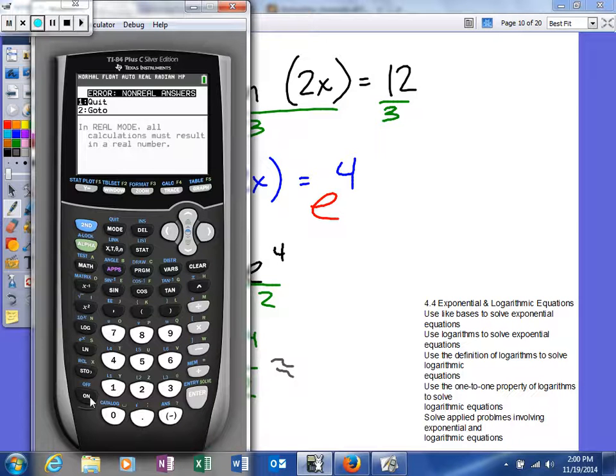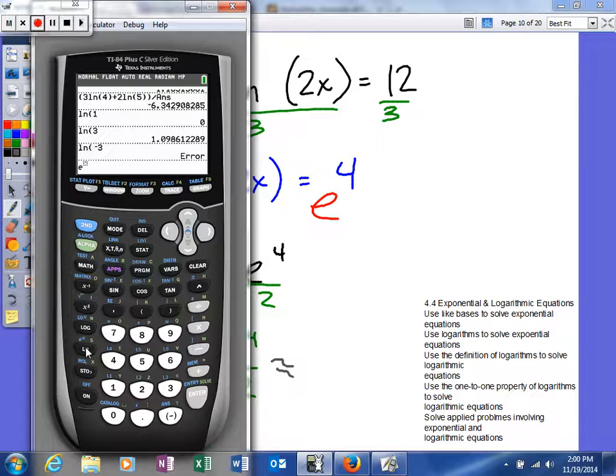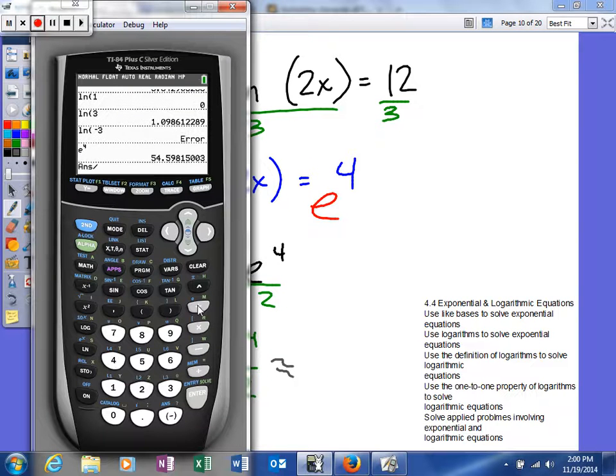I'll turn it on. I want to do e to the 4th. So I'll type in 2nd natural log and it brings up e. It already has it written as an exponent. So e to the 4th, and then divide that by 2.